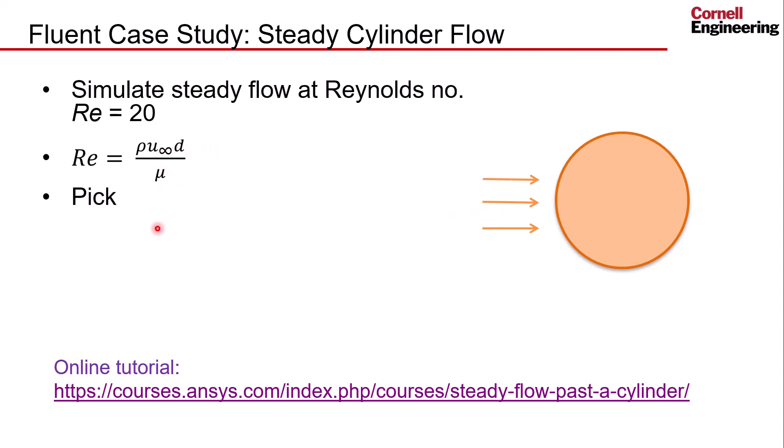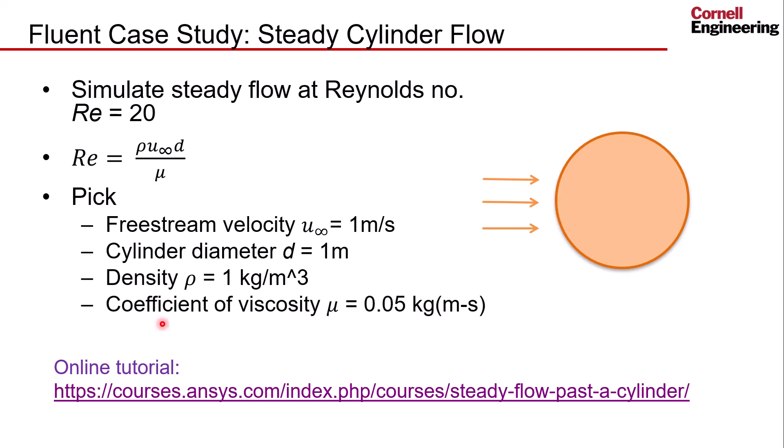To get a Reynolds number of 20, I will pick the free stream velocity to be 1 meter per second, the diameter to be 1 meter, and the density to be 1 kg per meter cubed. So the numerator—all three terms—are 1, and so the coefficient of viscosity will be 1 over 20, which is 0.05 in SI units.